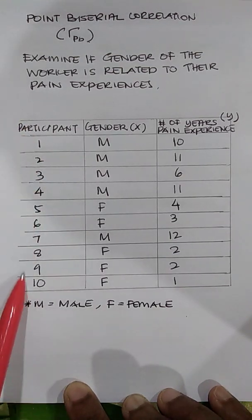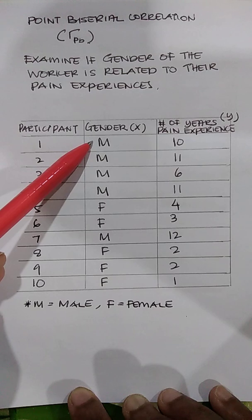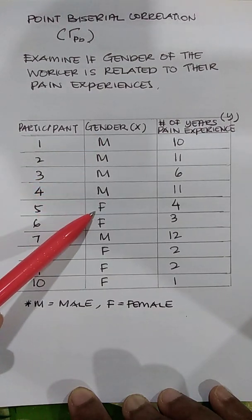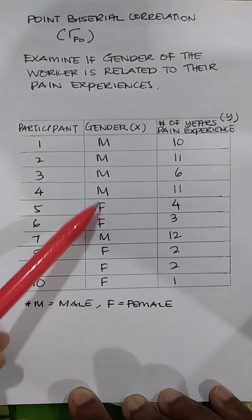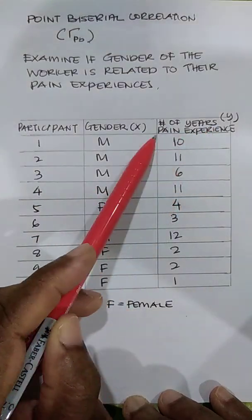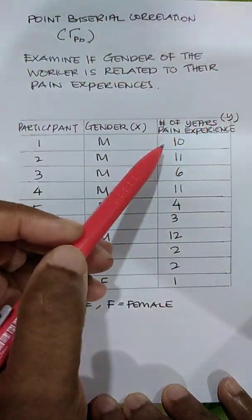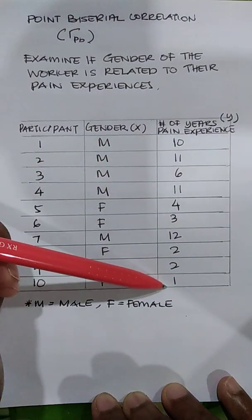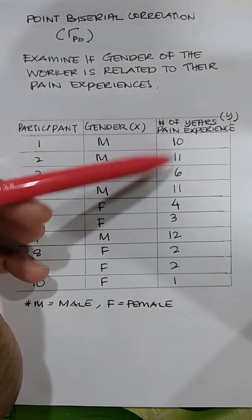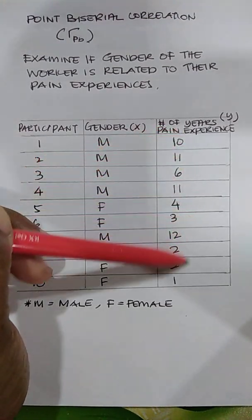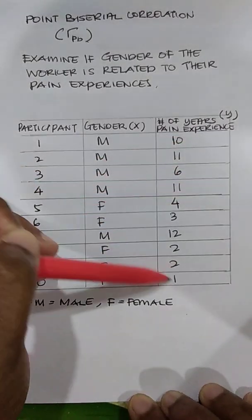We collected information from 10 participants. M represents male and F represents female. Gender is one variable, and this variable is categorical and nominal. The number of years is your Y variable — the pain experienced by the workers — and this Y is a continuous variable because there are equal intervals between values. For example, from 10 to 11 is the same interval as from 11 to 12.